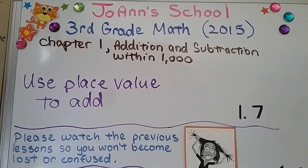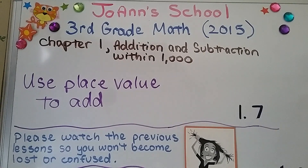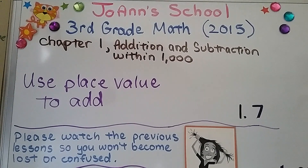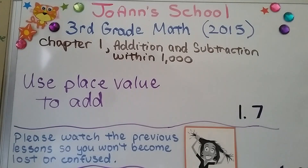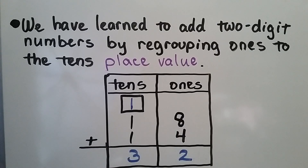We're at lesson 1.7 and we're going to use place value to add three-digit numbers. If you've missed the previous videos, they're linked in the description in the third grade math playlist. We've learned to add two-digit numbers by regrouping ones to the tens place value.